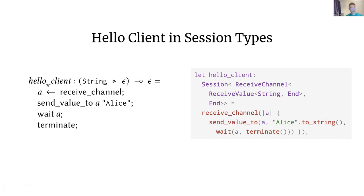Similarly, let's look at how clients are defined in Fairlight. The hello client wants to interact with a provider offering session type String right-triangle epsilon. The way we interact is by receiving the channel offered by the provider using a lollipop. Then after interacting with the provider we terminate. We use receive_channel and bind this to 'a' — a channel variable that must be used linearly. Since the provider expects to receive a value, we send a string value to channel 'a', then wait for channel 'a' to terminate before terminating ourselves.